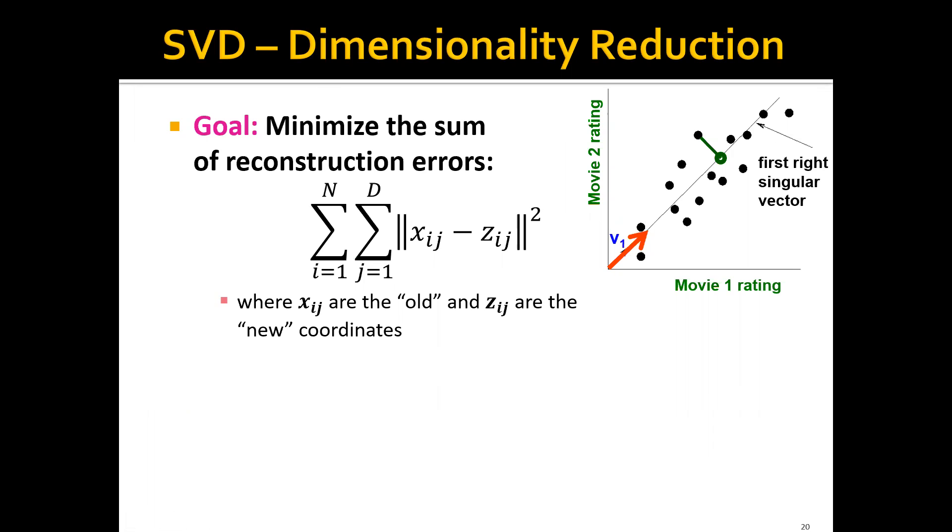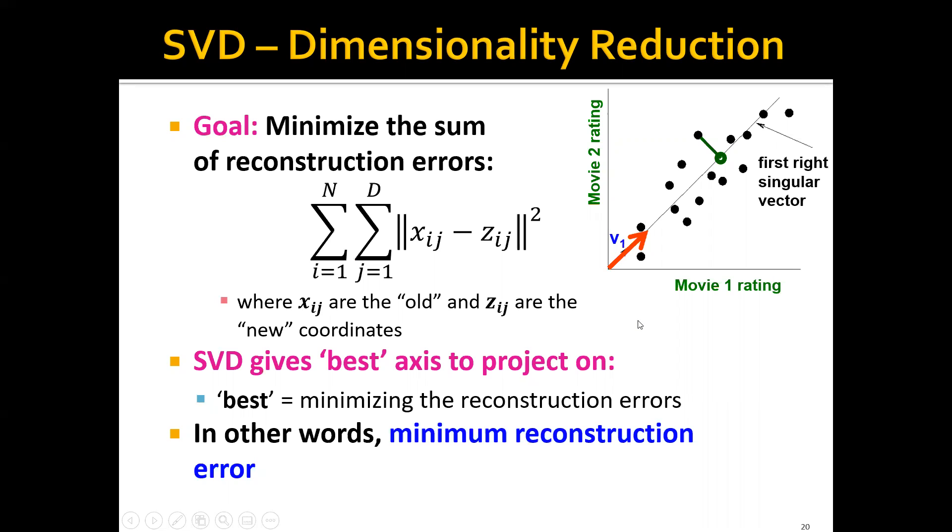Where Xij is the old coordinates in the old coordinate system and Zij is the coordinates in the new coordinate system. Again, the reconstruction error for each point is simply the distance between one point and the vector V1. Interestingly, SVD gives us the best axis to be projected on. Here the best simply means minimizing the reconstruction error. In other words, SVD actually produces minimum reconstruction error.